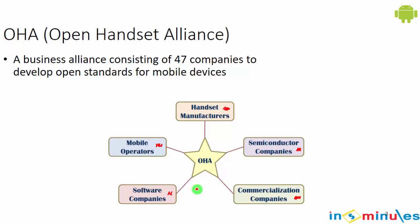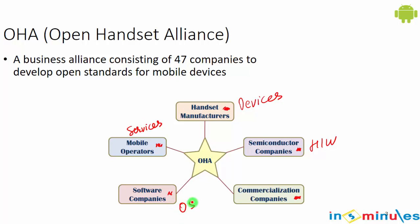Have you ever wondered why Android has everything we ever needed, right from media players to email clients? It's because it was made with five core contributors: semiconductor companies for hardware, hardware manufacturers for devices, mobile operators for services, software companies for the OS, and commercial companies to target the market.